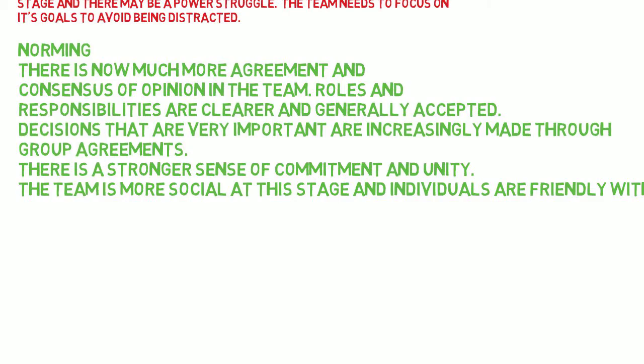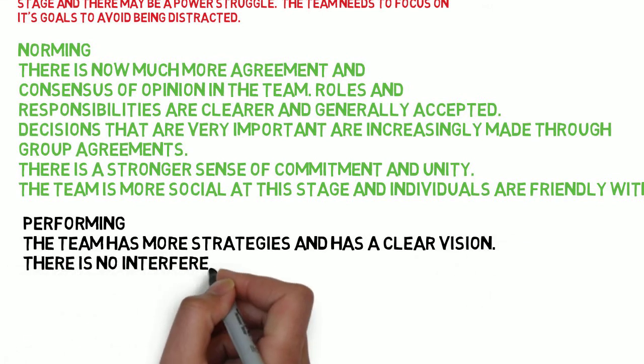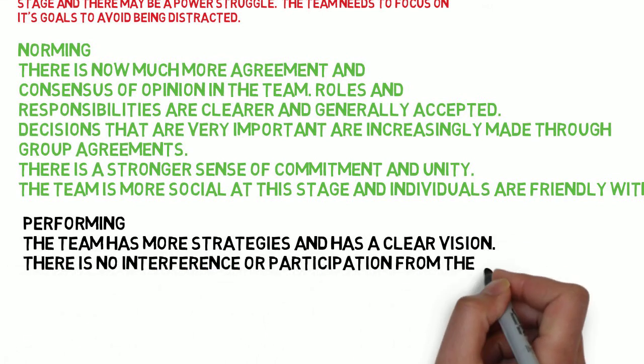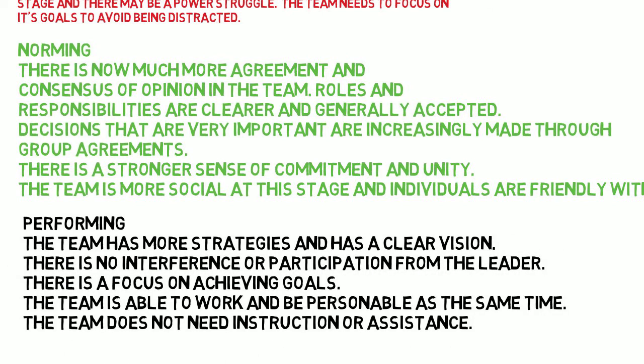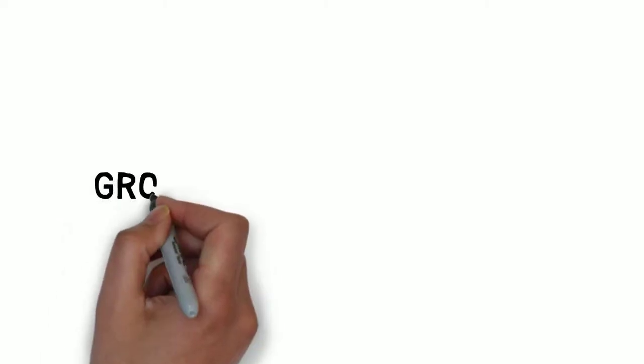After storming comes the norming stage, where responsibilities are clearer and generally accepted. Decisions are increasingly made through group agreements and there's a stronger sense of commitment. Finally, you get to the performing stage, which might take a while, but this is where there's a lot of focus on achieving the goals for the group, usually through group discussion and decision.